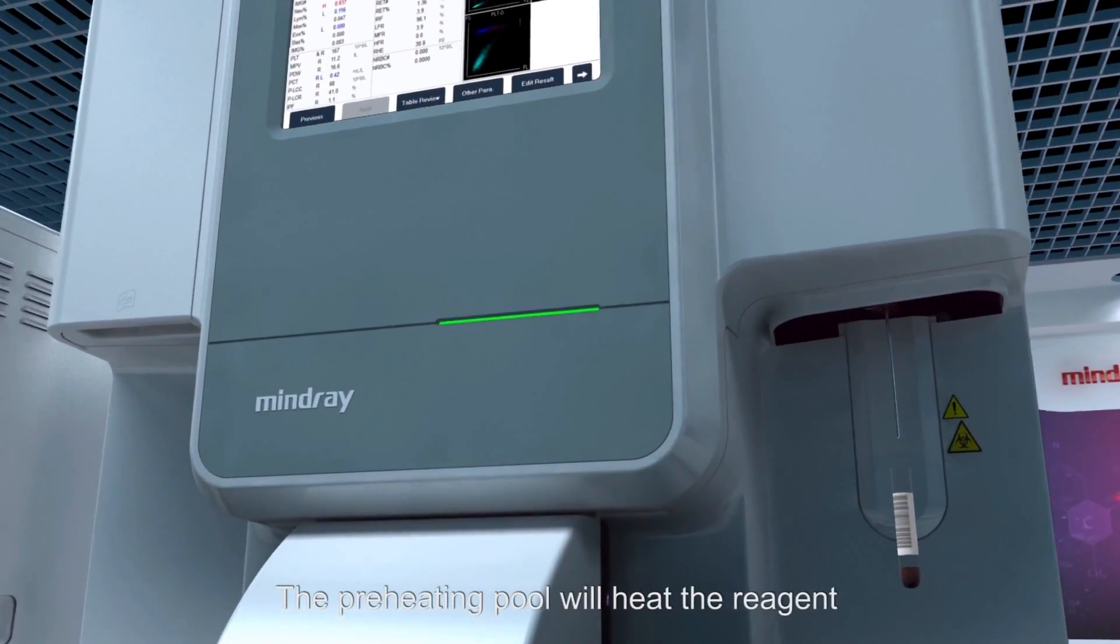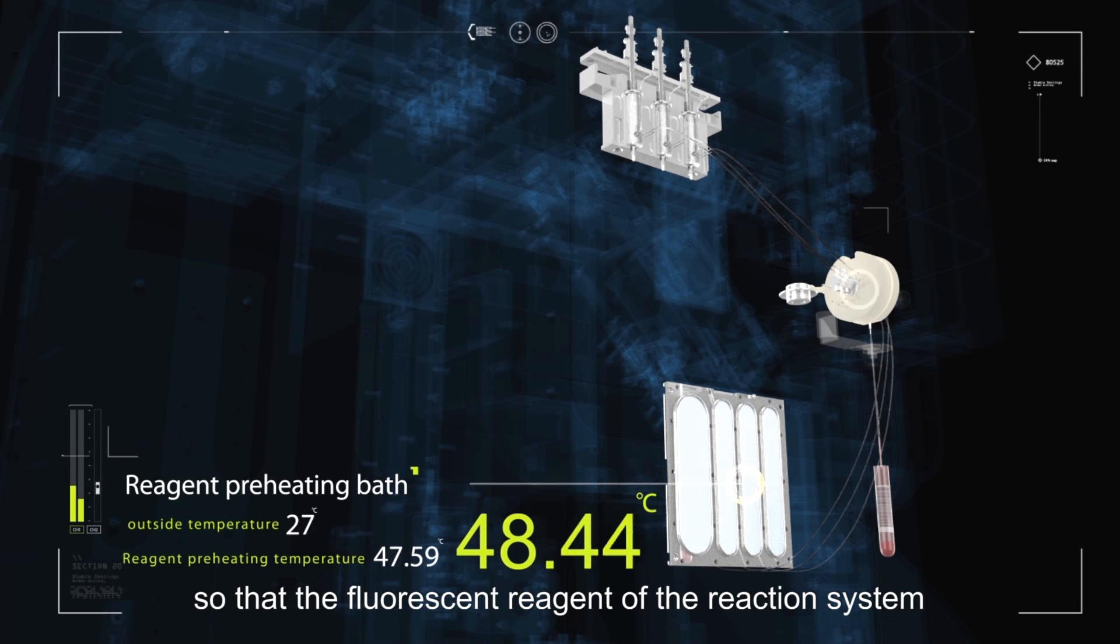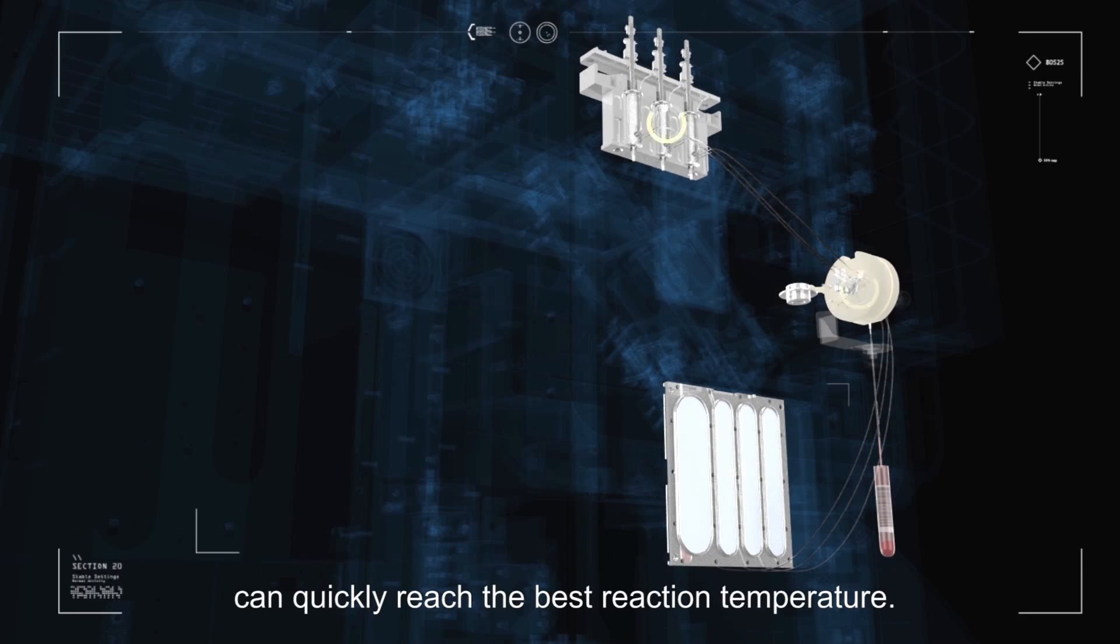The preheating bowl will heat the reagent according to the temperature of the environment, so that the fluorescent reagent of the reaction system can quickly reach the best reaction temperature.